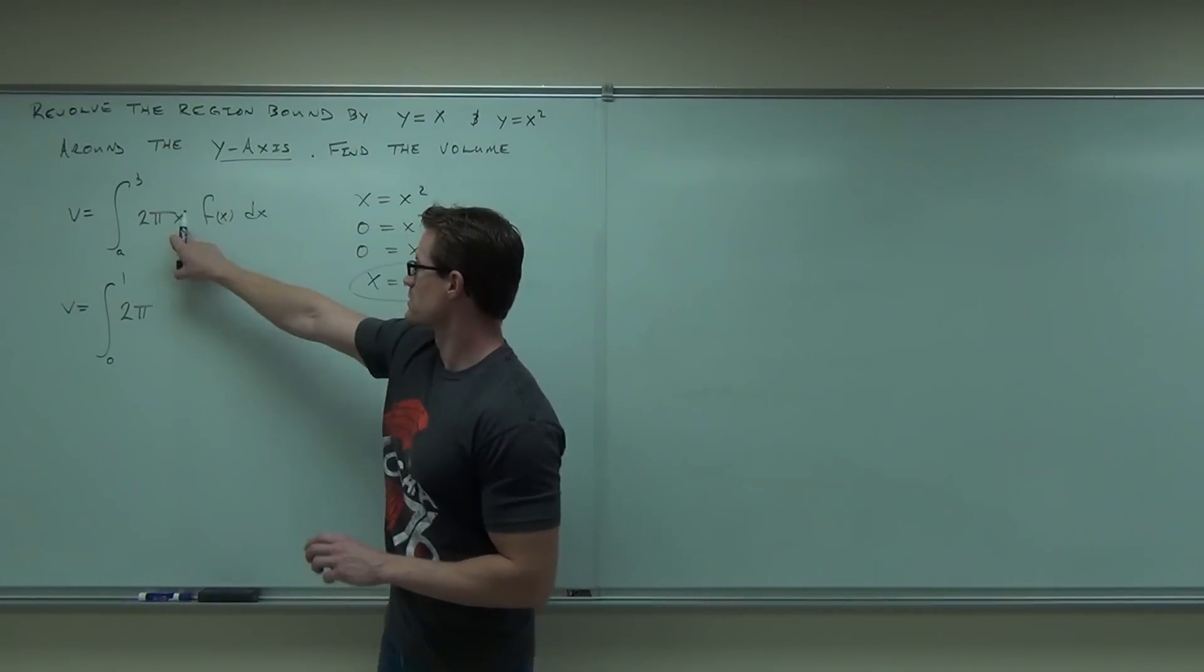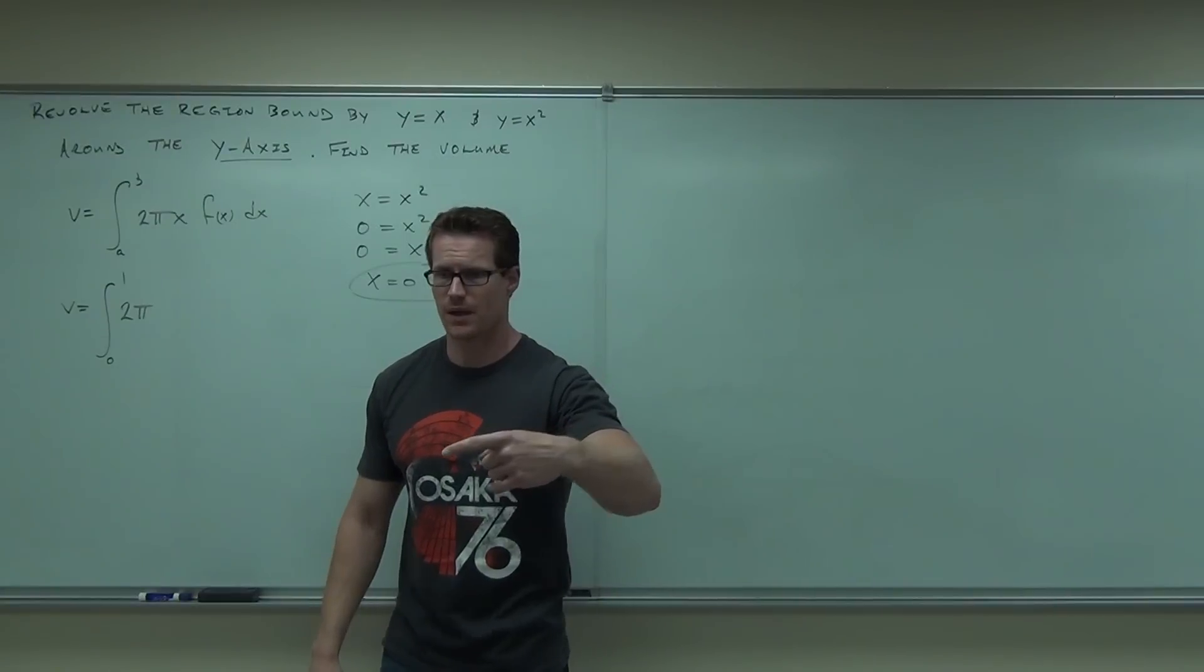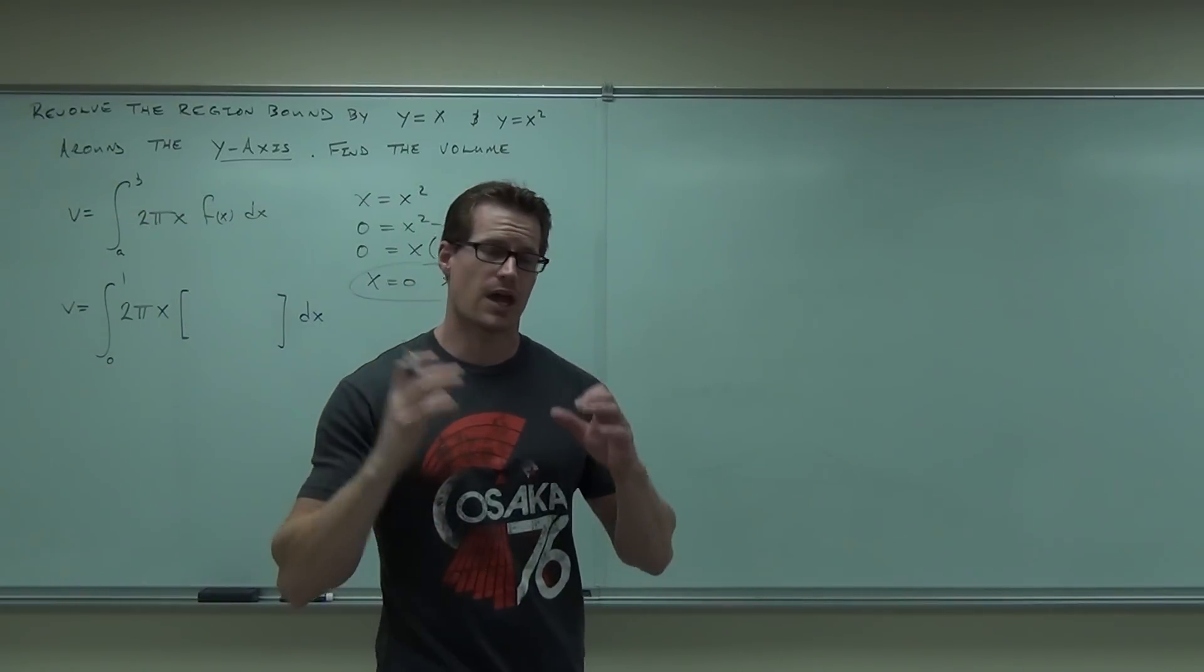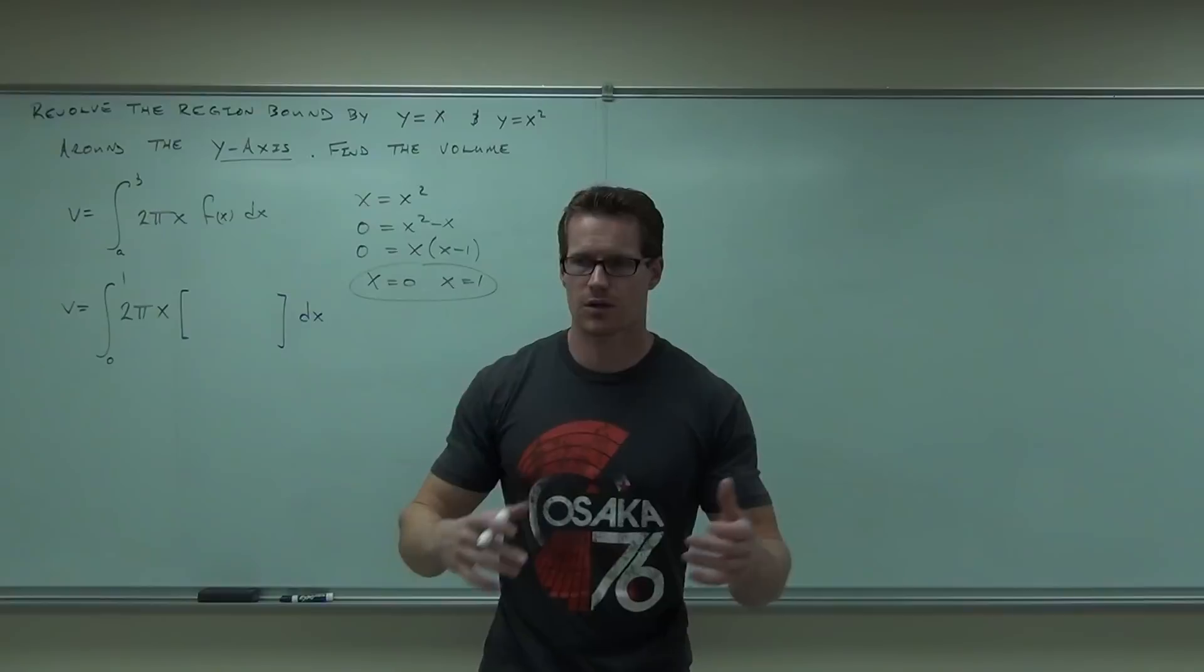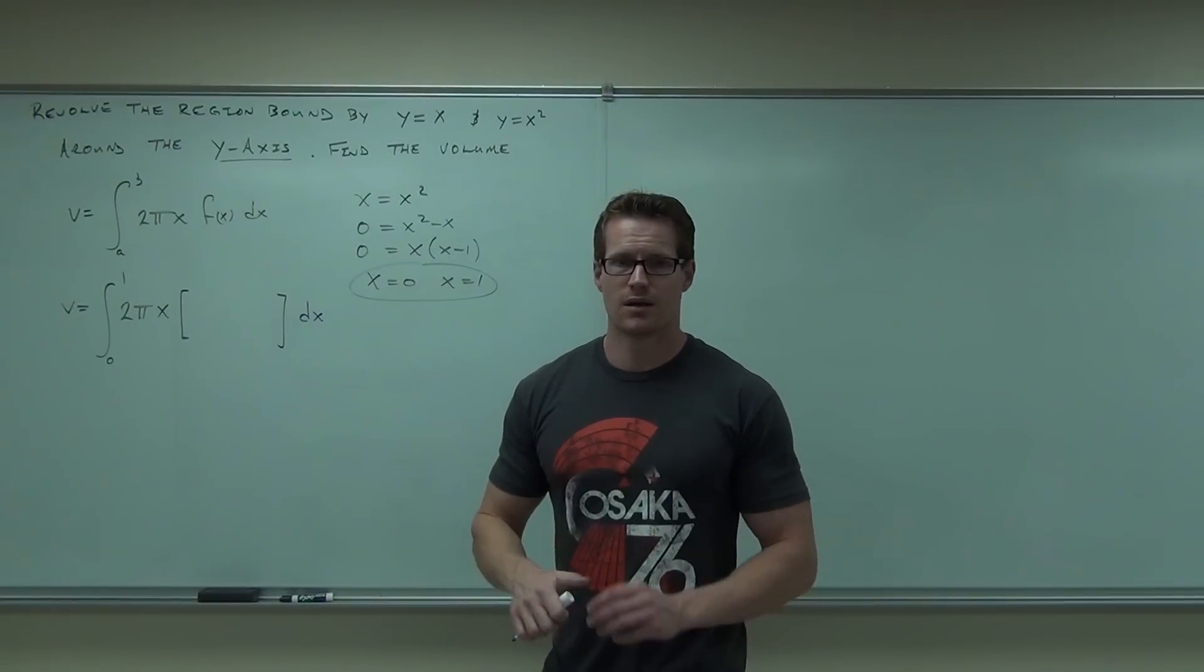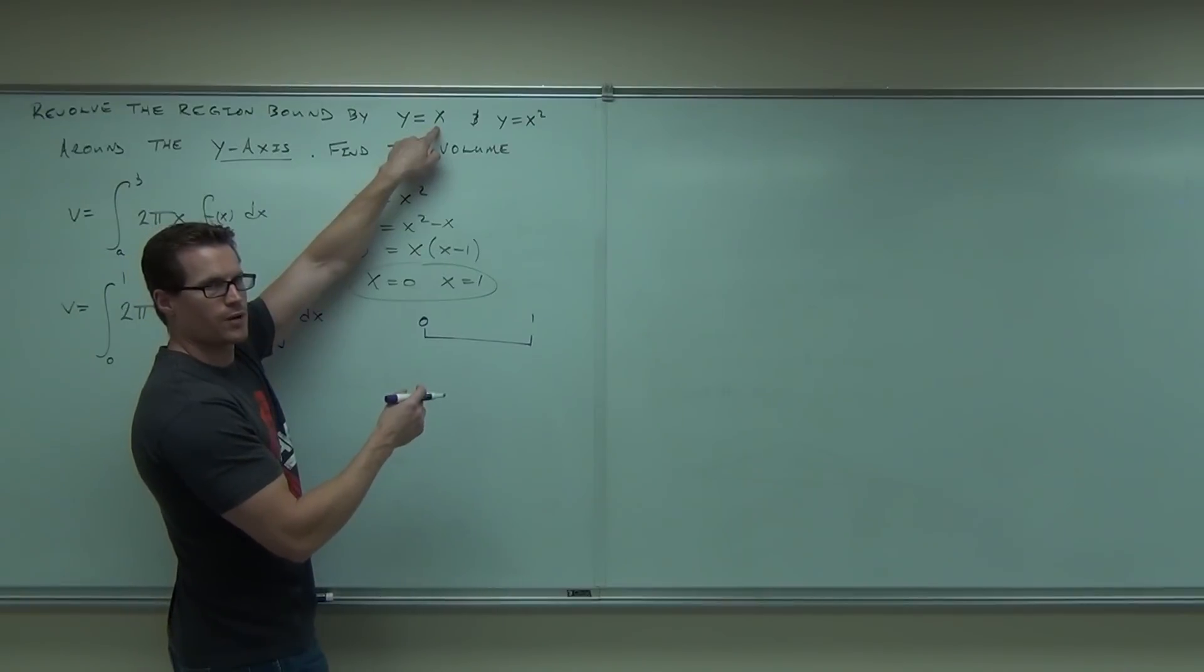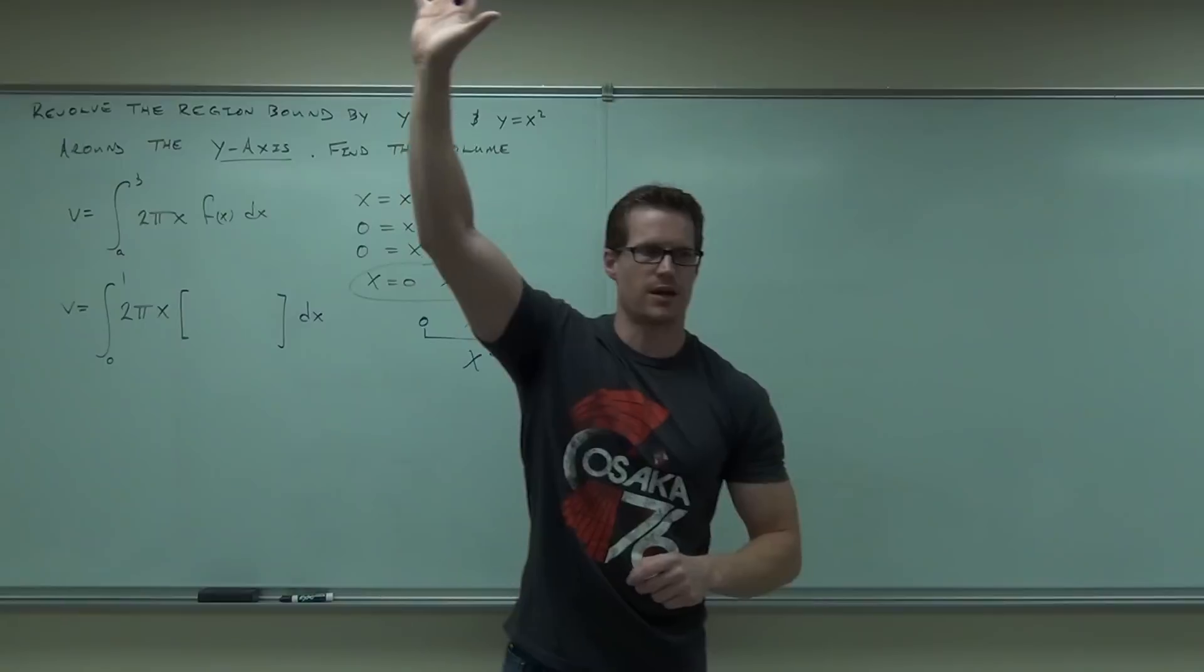The x is going to be there no matter what, unless we're going around the x-axis and then that's a y variable. What we care about finding is the f(x) in this case. Now, be careful, but set it up just like you would the area between two curves. We're going to find the function on the top, the function on the bottom, and subtract them. Can you find the function on the top? Plug in one half. If I plug in one half to x, I get one half. If I plug in one half to x squared, I get one fourth. That tells you x is on the top and x squared is on the bottom.